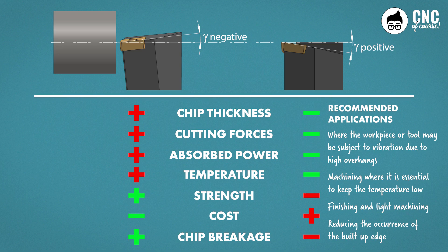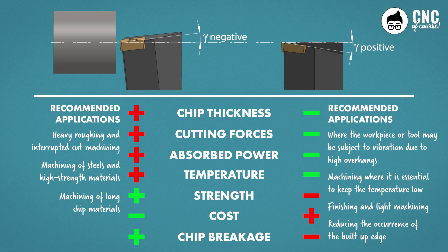and temperatures in the cutting zone low, so it is also suitable for reducing the occurrence of the build-up edge. The negative tool, on the other hand, generates more stress but is much more robust, making it suitable for roughing and interrupted cutting. Thanks to its greater chip thickness, it allows better machinability, and is therefore suitable for machining materials with long chips. Although it should be noted that the negative tool generates more cutting forces, and therefore higher operating temperatures.